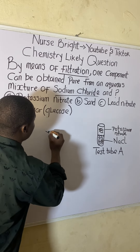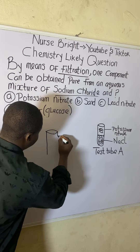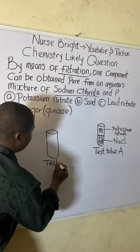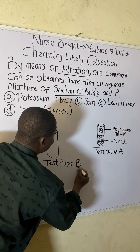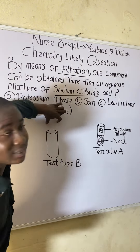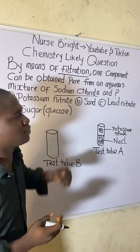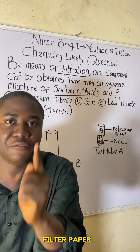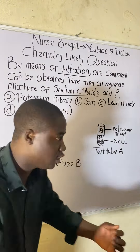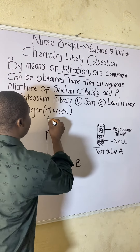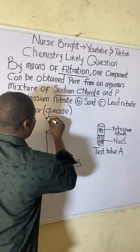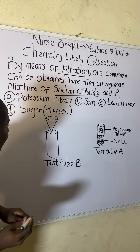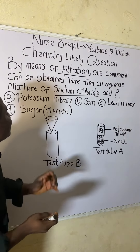Test tube B is set up with a filter paper — shaped like a cone — placed at the top. This filter paper is the key requirement for performing the filtration procedure. We will pour the contents of test tube A through this filter paper into test tube B to see which component is separated.